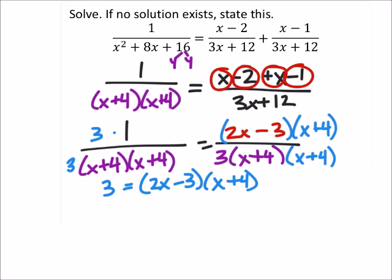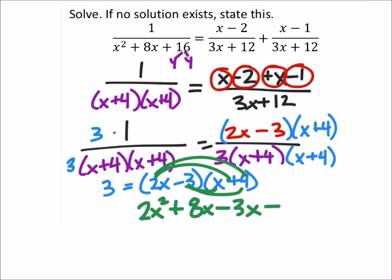Alright, now we need to multiply these. So, 2x times x is 2x squared. And 2x times 4 is plus 8x. And then negative 3 times x is a negative 3x. Negative 3 times 4 is negative 12. All of this equals 3.